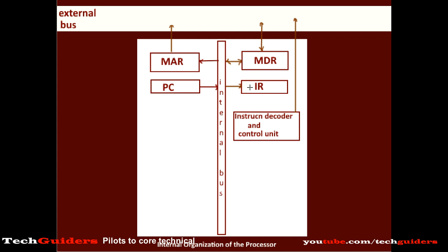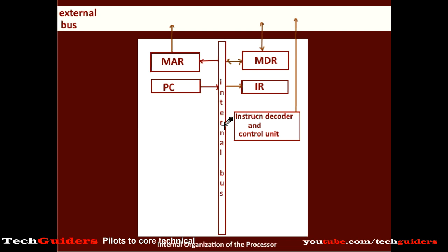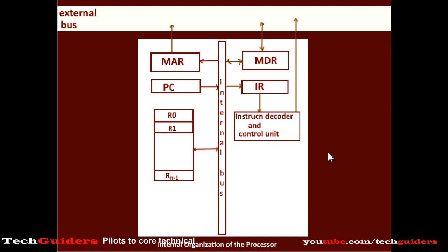So finally the instruction is fetched to the processor and kept in the instruction register, and the instruction fetch phase is over. Now the instruction has to be decoded. The instruction from the instruction register will be directly fed to the control unit. The instruction decoder and control unit decode the instruction to identify what operations are required and whether any data are needed. Some operands may already be present in the processor's general purpose registers, and sometimes operands have to be fetched from memory.